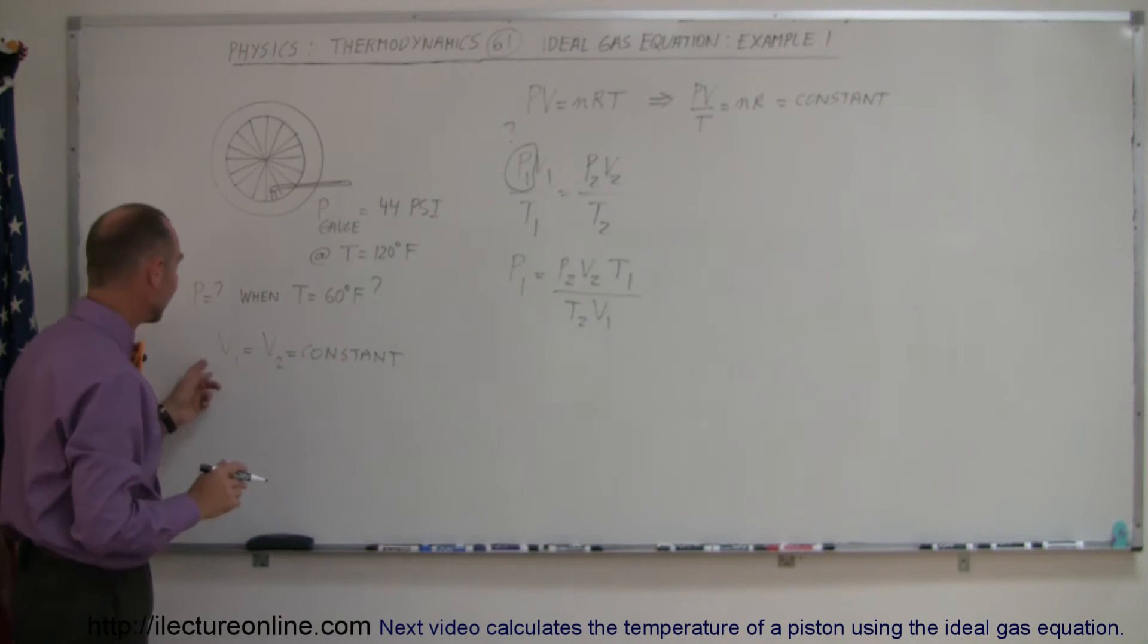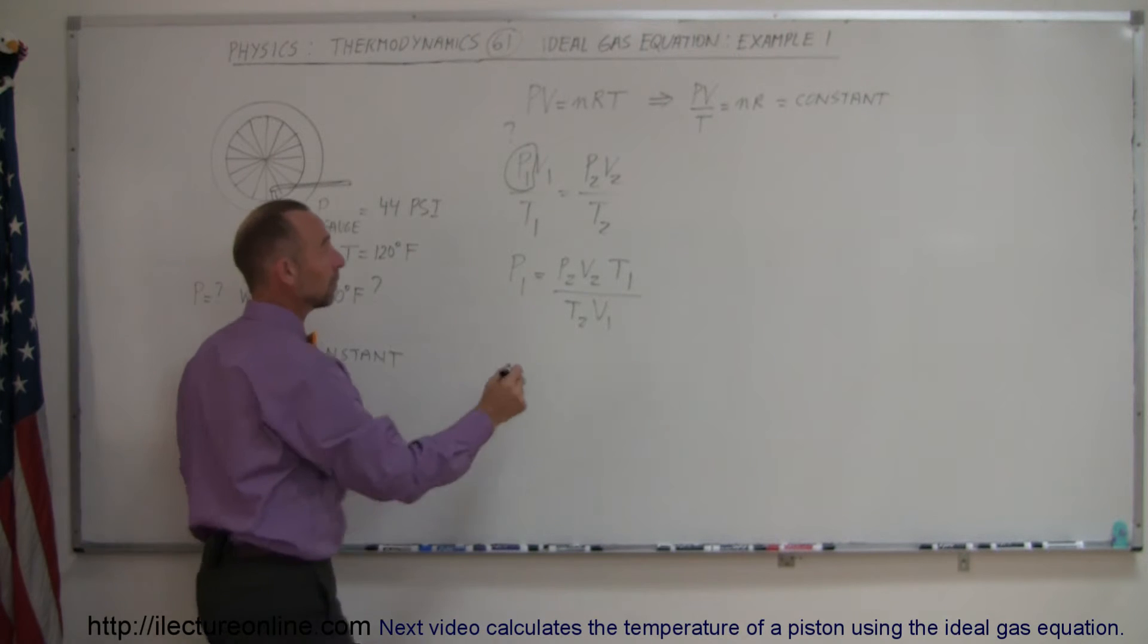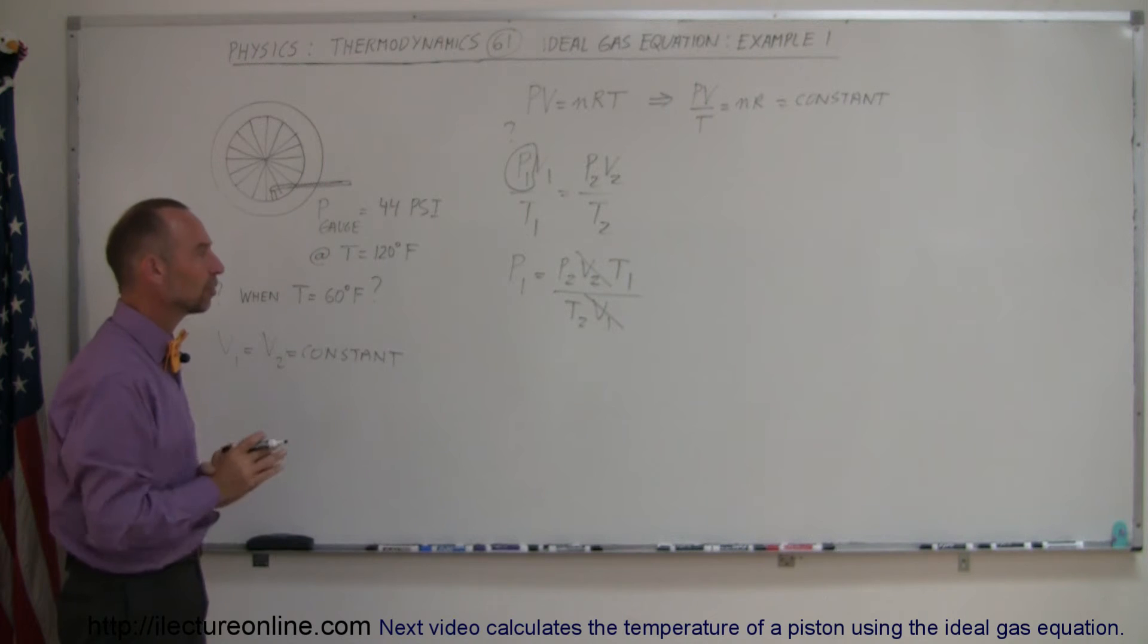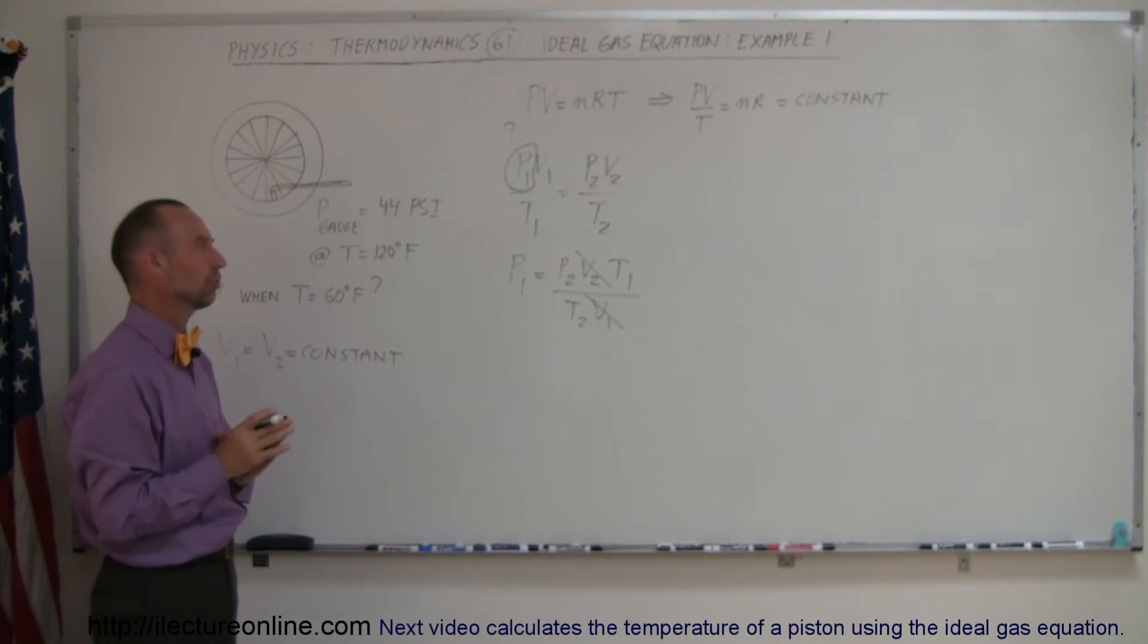Now also realizing that V1 and V2 are approximately equal, that means that V2 and V1 cancel each other out, and so now we're just left with plugging the numbers here. We have to be cautious for a few things.